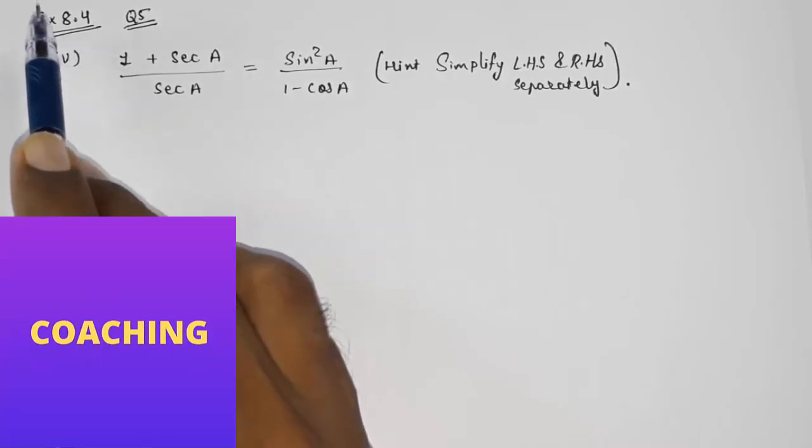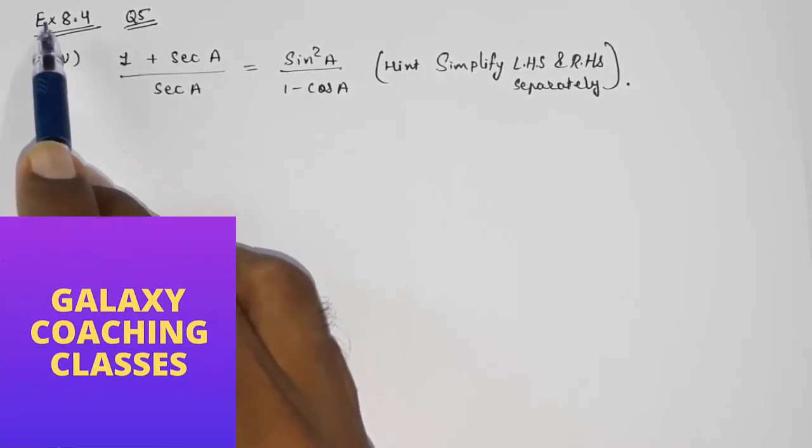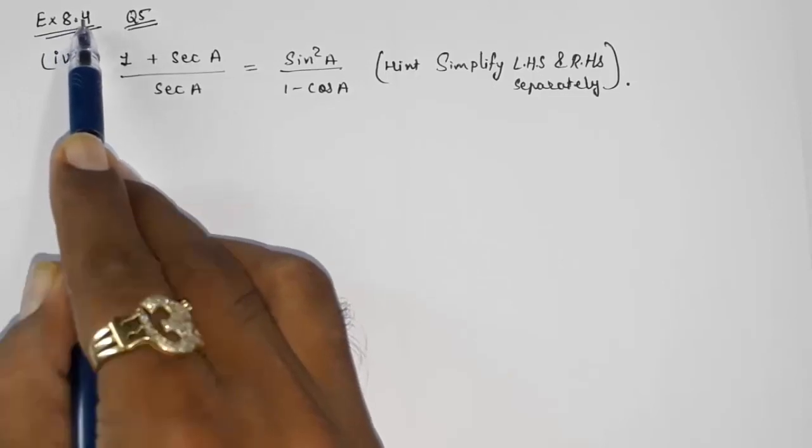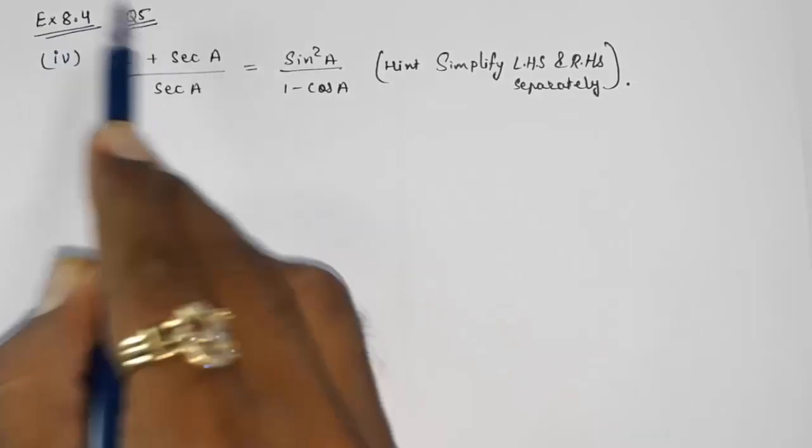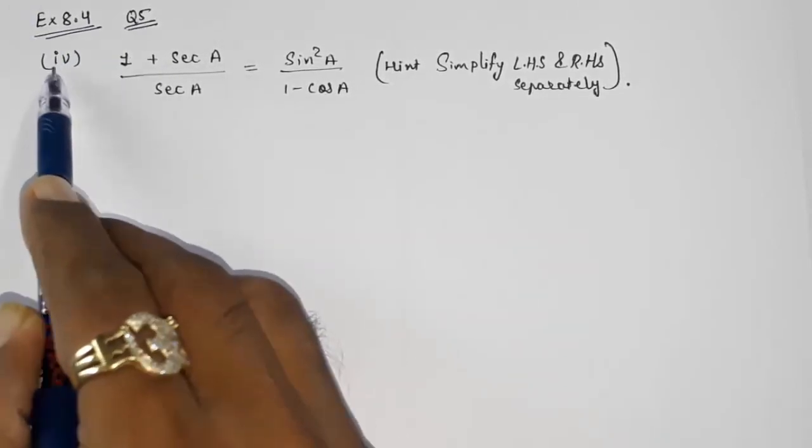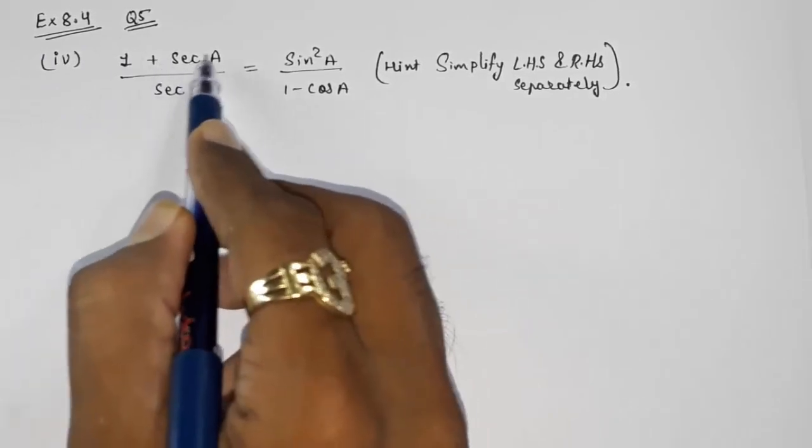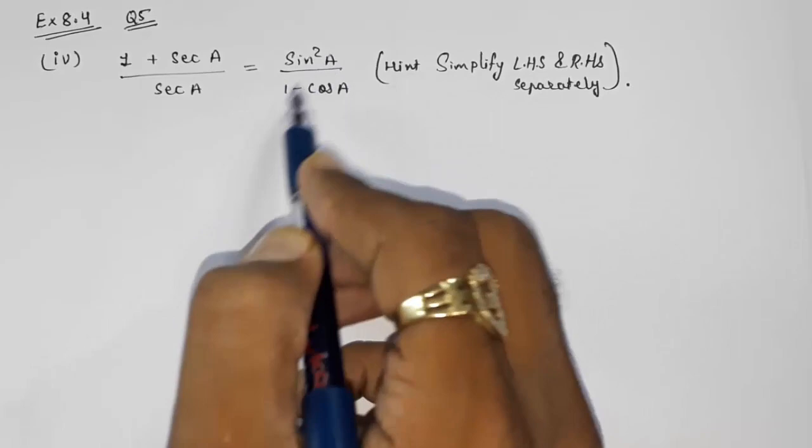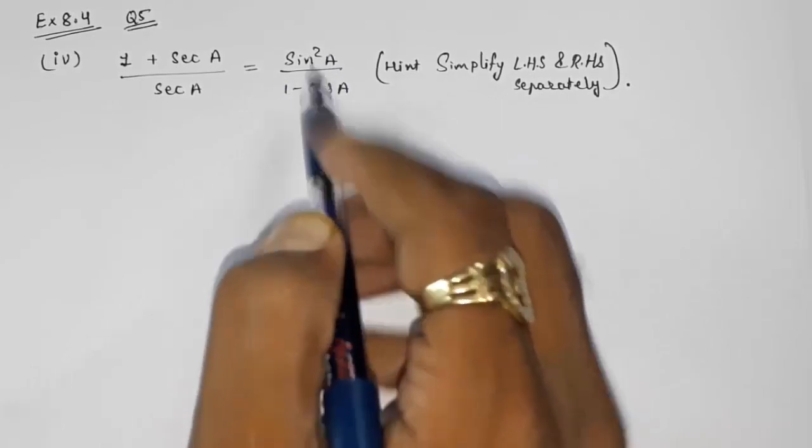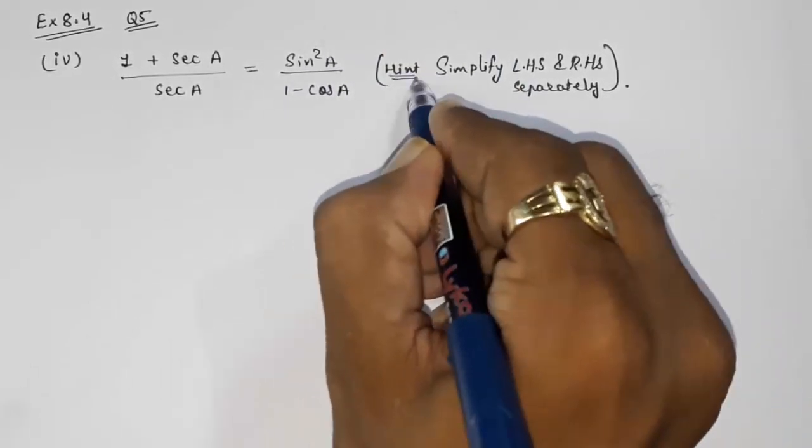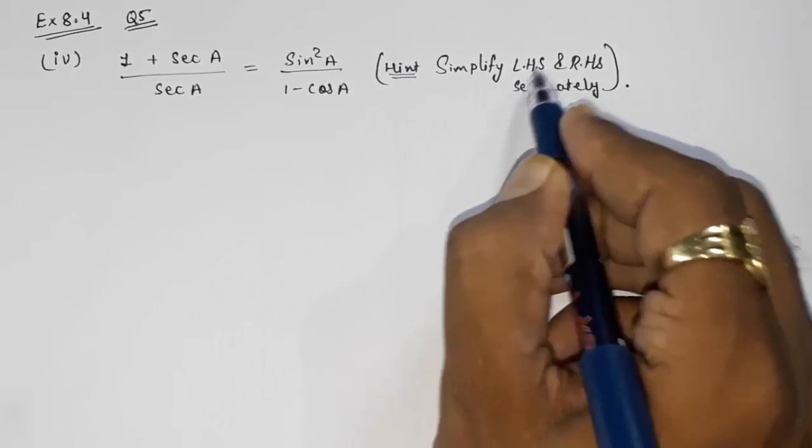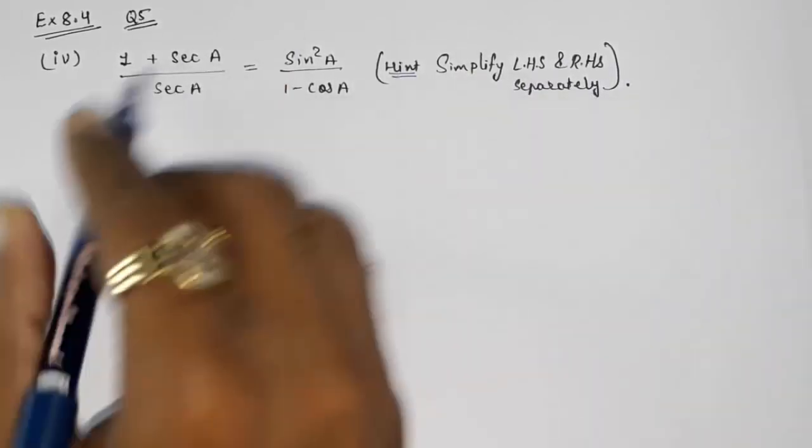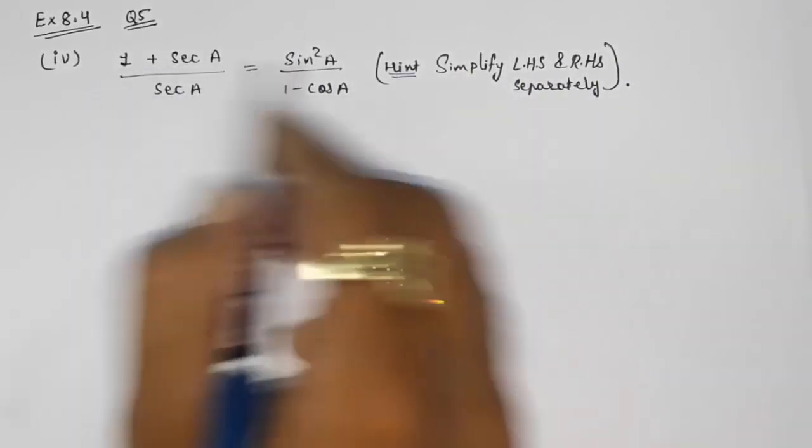Hello friends, today we are going to solve CBSE Class 10th Maths Exercise 8.4, question number 5. Prove that 1 plus sec A whole upon sec A is equal to sin square A upon 1 minus cosine A. They had given a hint also that simplify LHS and RHS separately, means we have to simplify both these terms.